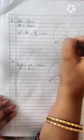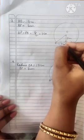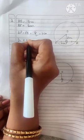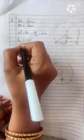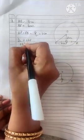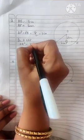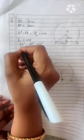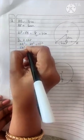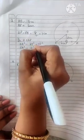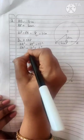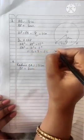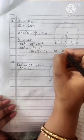In triangle OAP, which is a right-angled triangle: OA² equals AP² plus OP². So OA² equals 4² plus 3², which is 16 plus 9 equals 25. Therefore OA equals 5 cm — that is the radius of the circle.